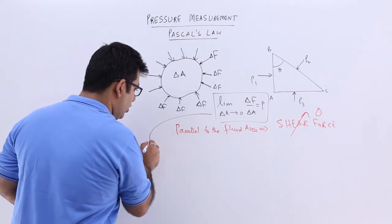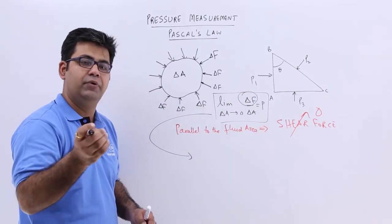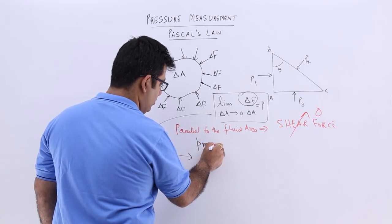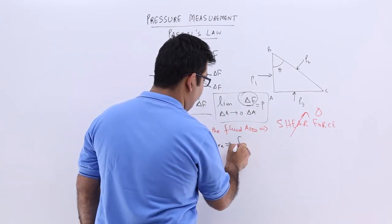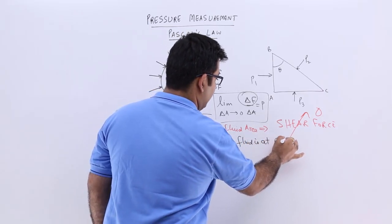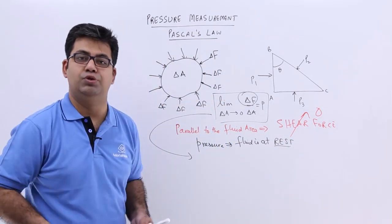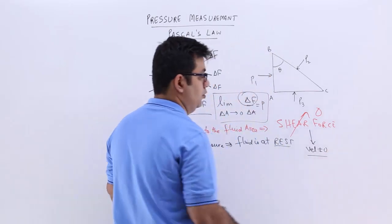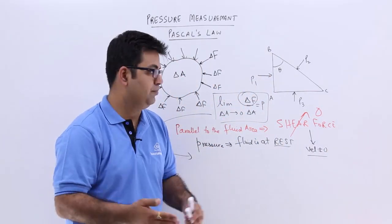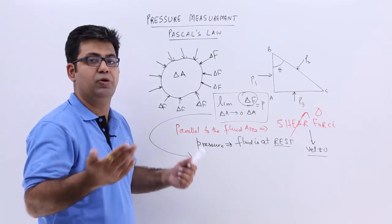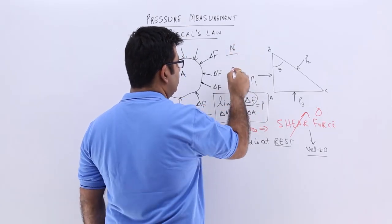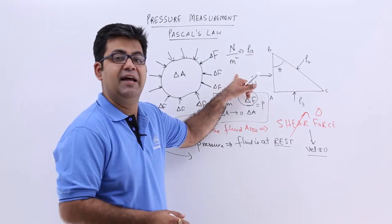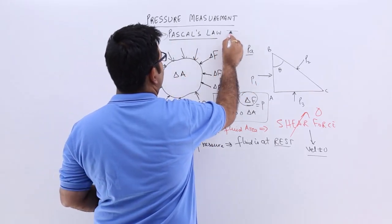We are more concerned with the pressure force — the component perpendicular to the fluid area. We consider pressure when the fluid is at rest, that is, when the fluid is static with no motion. Shear force is considered when there is some velocity and the fluid is in motion. The unit of pressure is newtons per meter square, or Pascal. With units of pressure as Pascals, let us come to Pascal's Law for fluids.